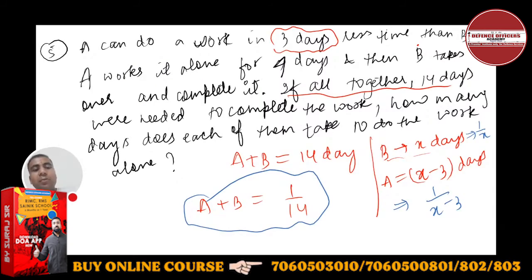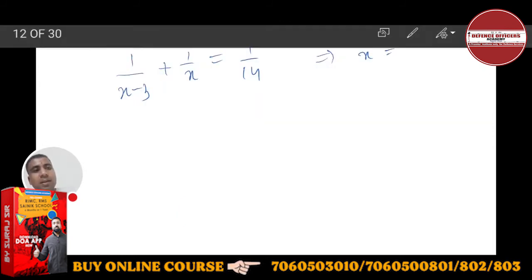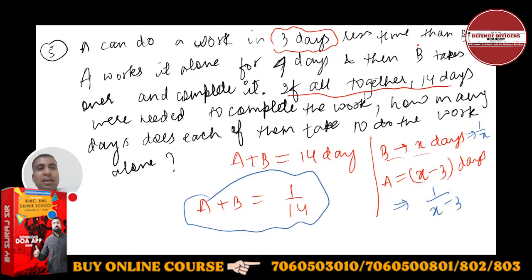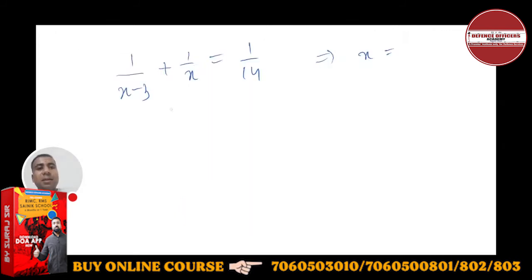Now it's very simple. What is the crux of this question? A works for 4 days, and then B takes over. B has taken remaining days, you don't know the number of days. Suppose if B has taken y days. Then the work will be complete, meaning complete work equals 1.